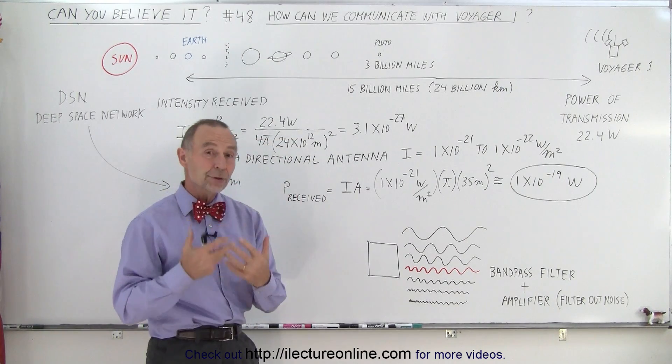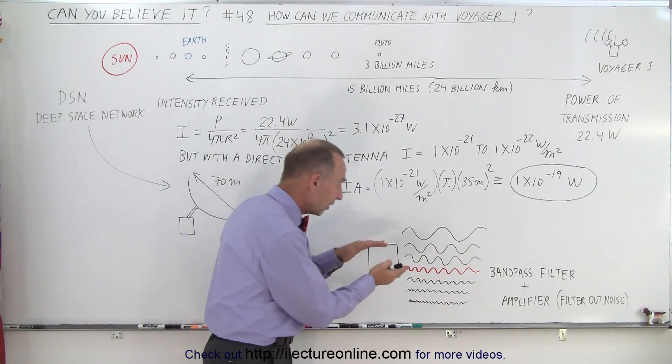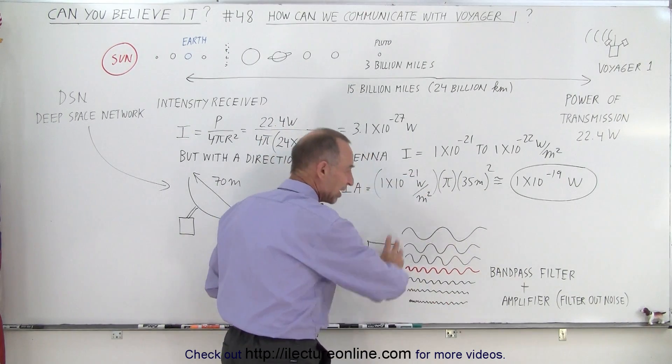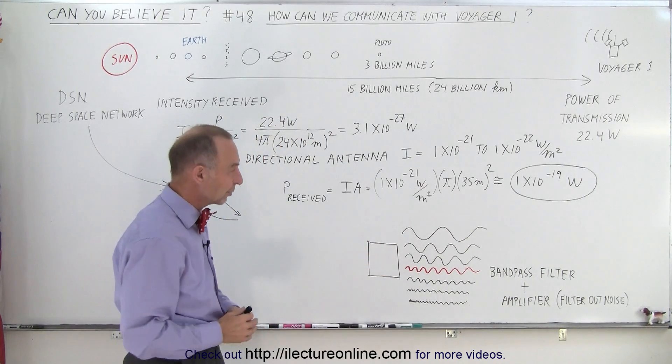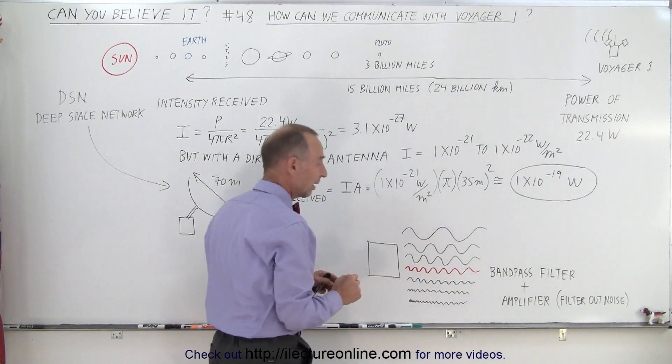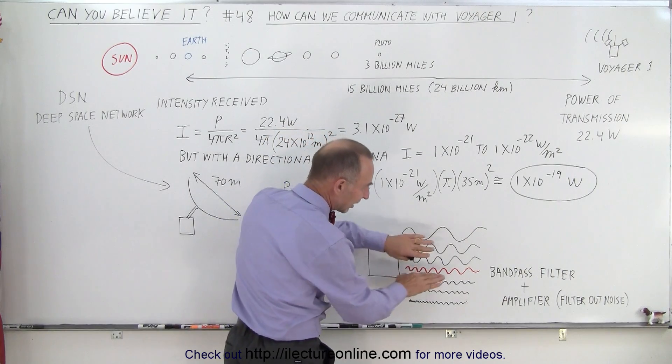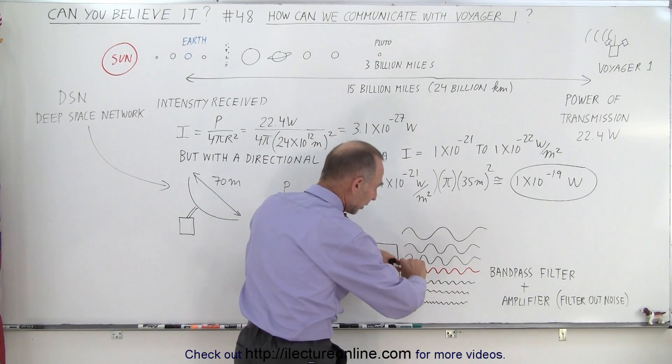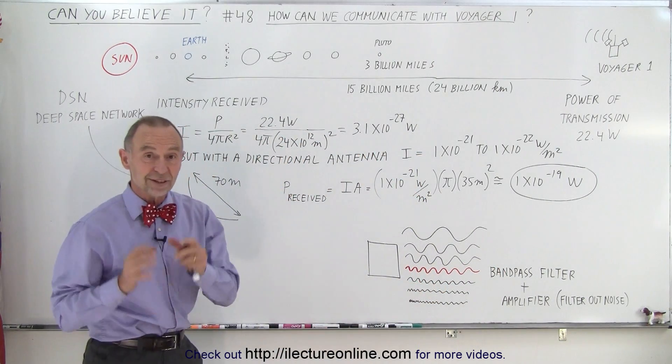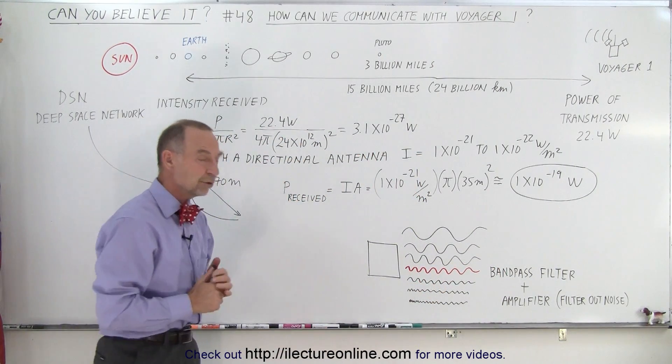So we then use computers to get the signal out of the myriad of information that comes from space from all directions at all different frequencies. We need to get the one signal out that came from Voyager 1. And so we use a bandpass filter that blocks all the other signals and only allows reception on this one frequency that Voyager 1 uses.